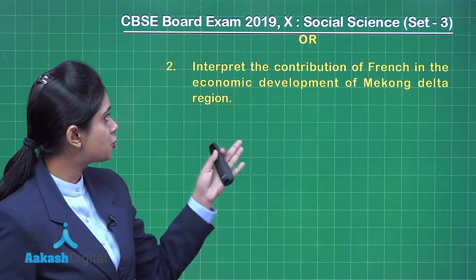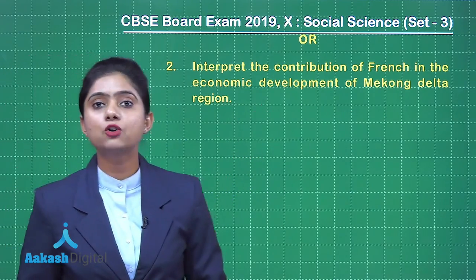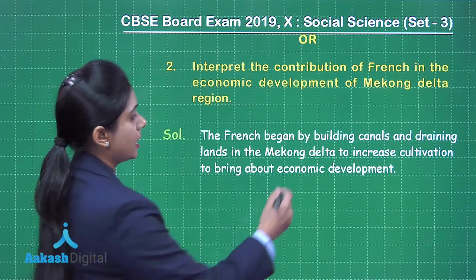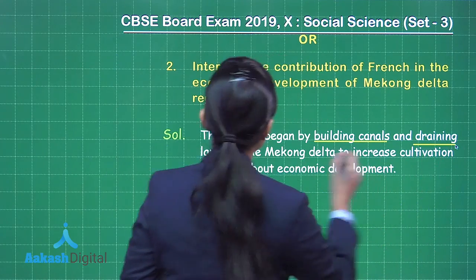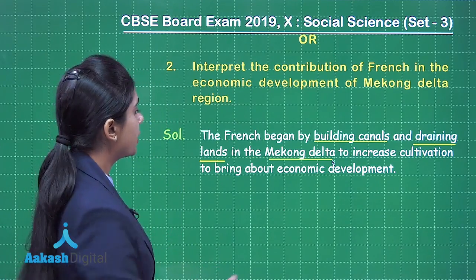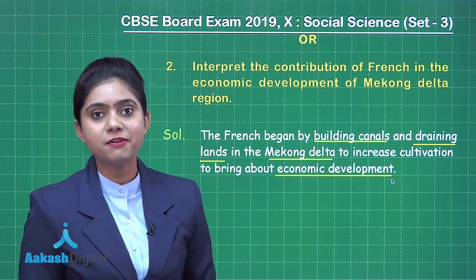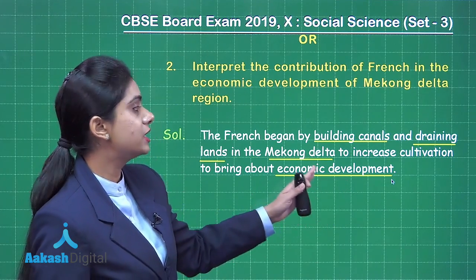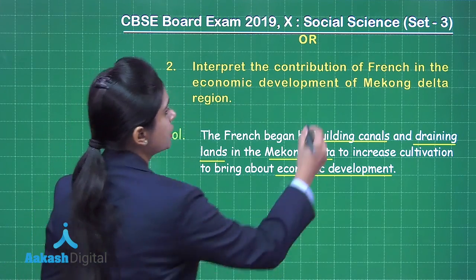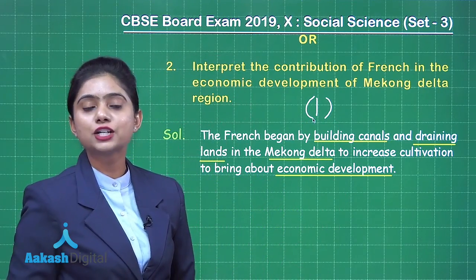The choice question for Q2: Interpret the contribution of the French in the economic development of the Mekong Delta region. The French began by building canals and draining lands in the Mekong Delta to increase cultivation and bring about economic development. This is how the French made efforts in bringing economic development to the Mekong Delta, and this answer will get you one mark.